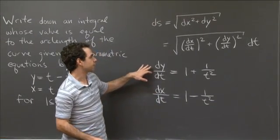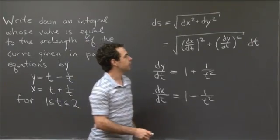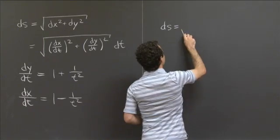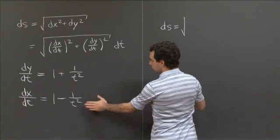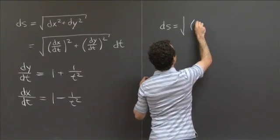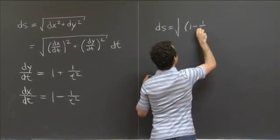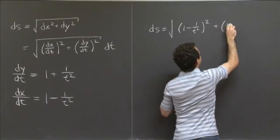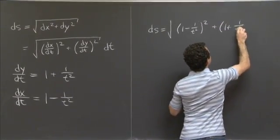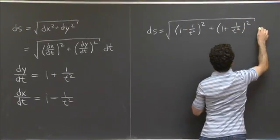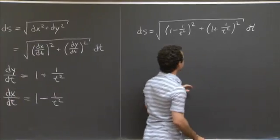OK, so we have to put them into that formula. So what do we get? We have ds = the square root of (1 - 1/t²)² + (1 + 1/t²)², dt outside.